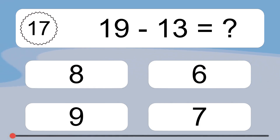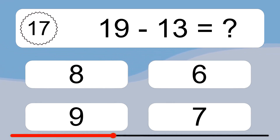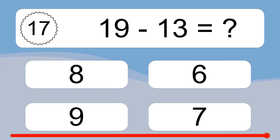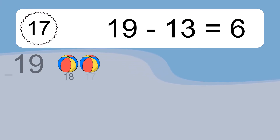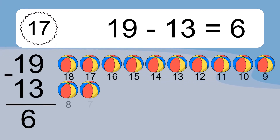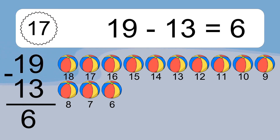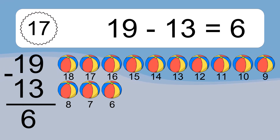19 minus 13 equals what? 19 minus 13 equals 6. Let's count it: 18, 17, 16, 15, 14, 13, 12, 11, 10, 9, 8, 7, 6.